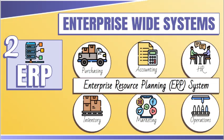Each ERP module consists of multiple applications that execute end-to-end business processes. For example, the purchasing module includes the applications necessary to create and manage contracts, orders, invoices, and payments to suppliers. These modules may also gather data from other modules to avoid data redundancy. For example, the accounting module will require employees' data from HR and timesheets' data from operations to prepare its payroll, and then details on the payroll will be needed in finance.